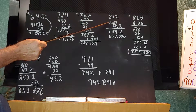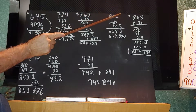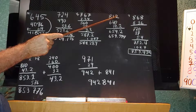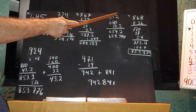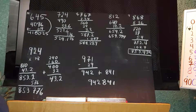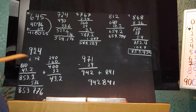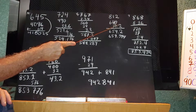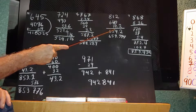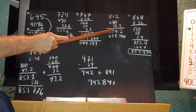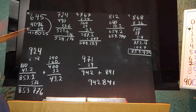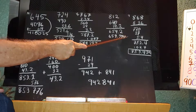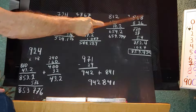For 812 squared: 800 squared is 640,000. We need to do 16 times 12 — 10 times 12 is 120 and 6 times 12 is 72, so 120 plus 72 is 192, I call that 19.2. Adding 19.2 to 640,000 we're at 659.2, then add 144 — 12 squared — giving 659,344.